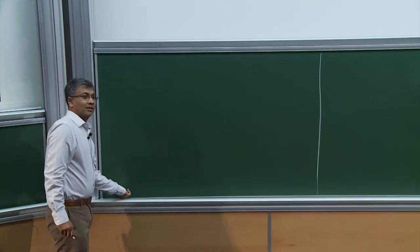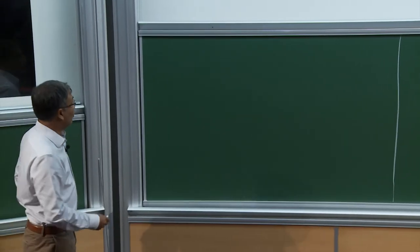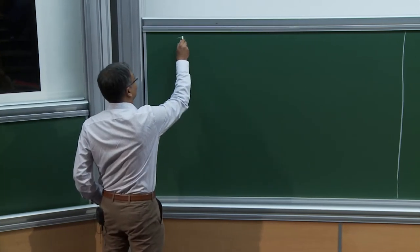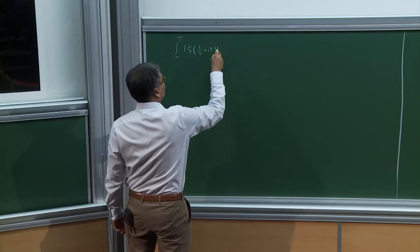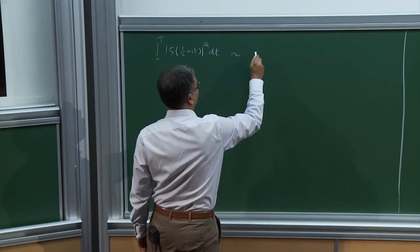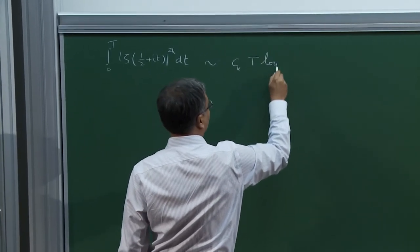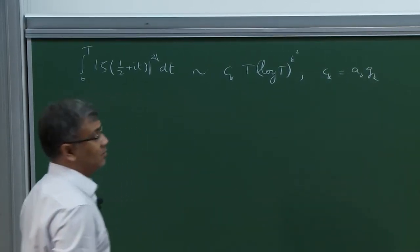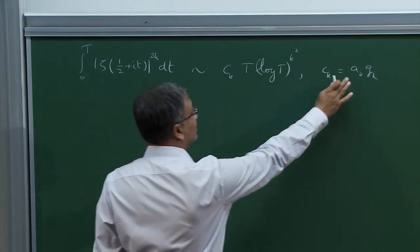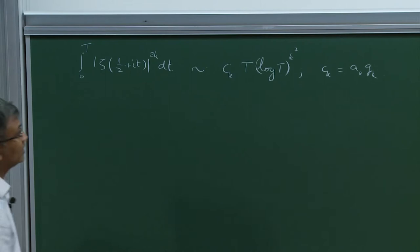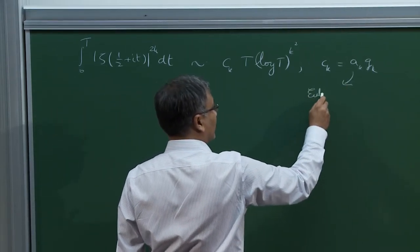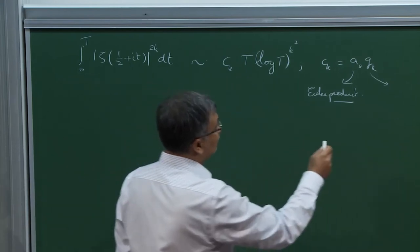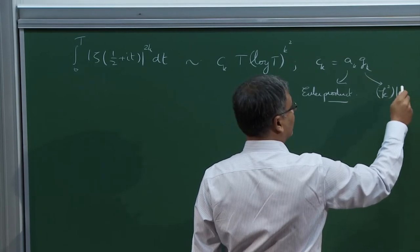Let me recall where I ended last time. I began discussing the problem of moments of L-functions on the critical line. For zeta, there are conjectures that the 2k-th moment behaves like some constant C_k times (t log t)^{k^2}. The constant C_k factors as a product of two things: A_k, which is easy to understand and can be written explicitly as an absolutely convergent Euler product, and G_k, a more mysterious factor for which I wrote down a conjectural formula last time.